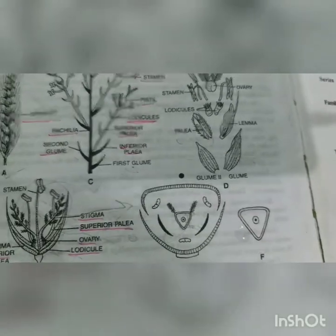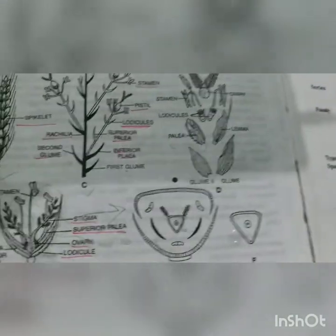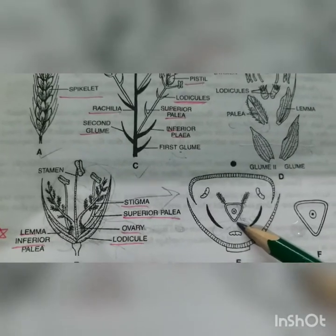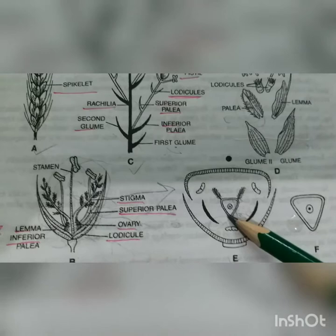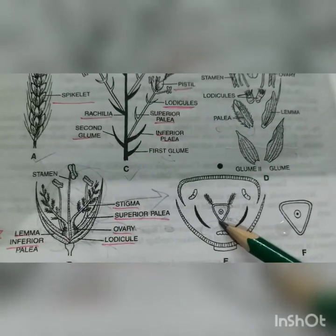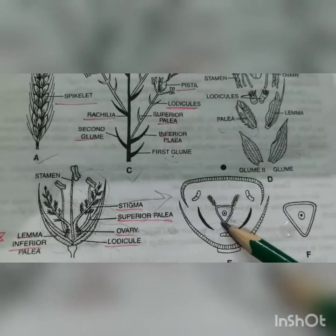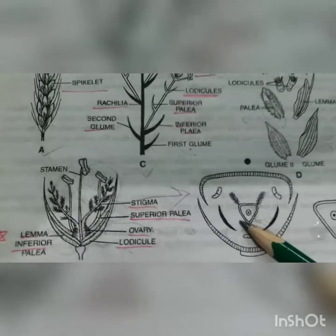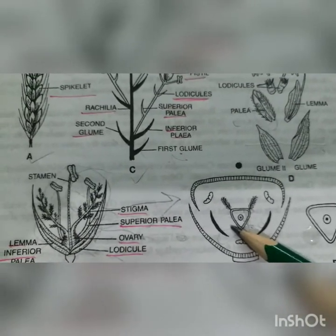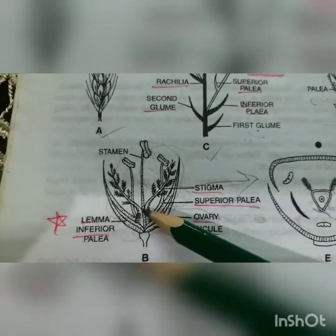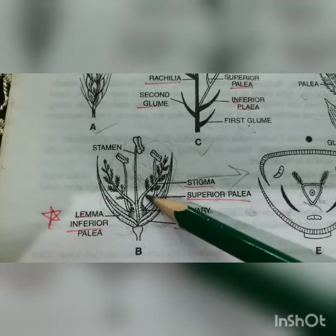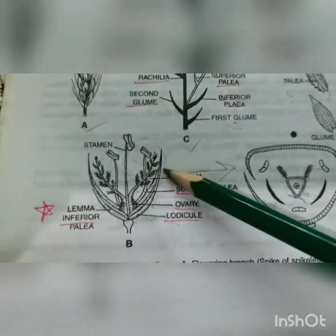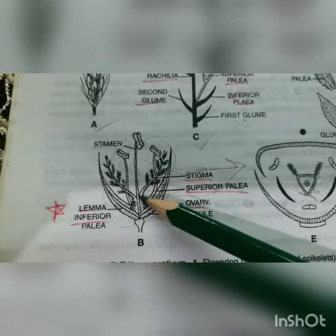This is the same as the first family we did - Ranunculaceae - where basal placentation is found. There is also Delphinium in that family, which has marginal placentation. Marginal placentation is also called ventral placentation because the ovules are present on the ventral side. The stigmas are two, feathery, and terminal - they arise directly from the top of the ovary.